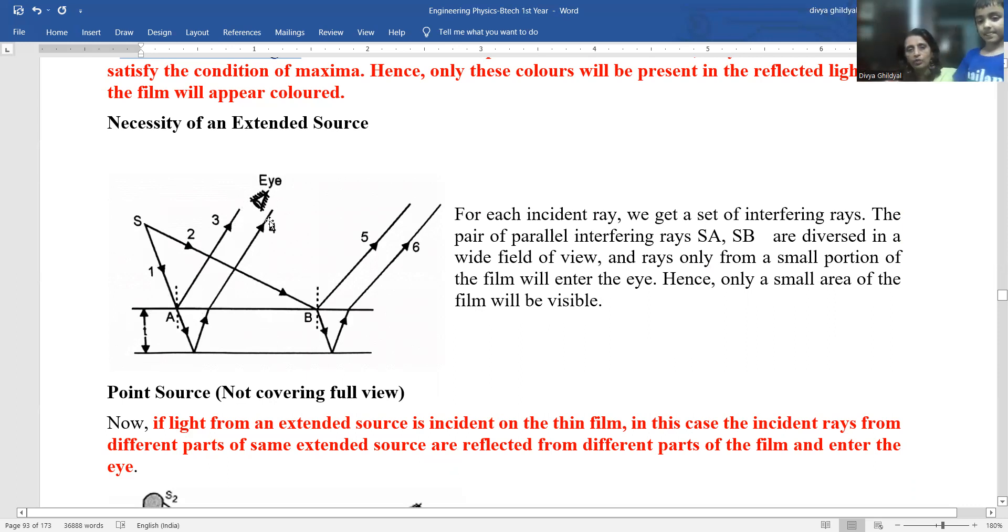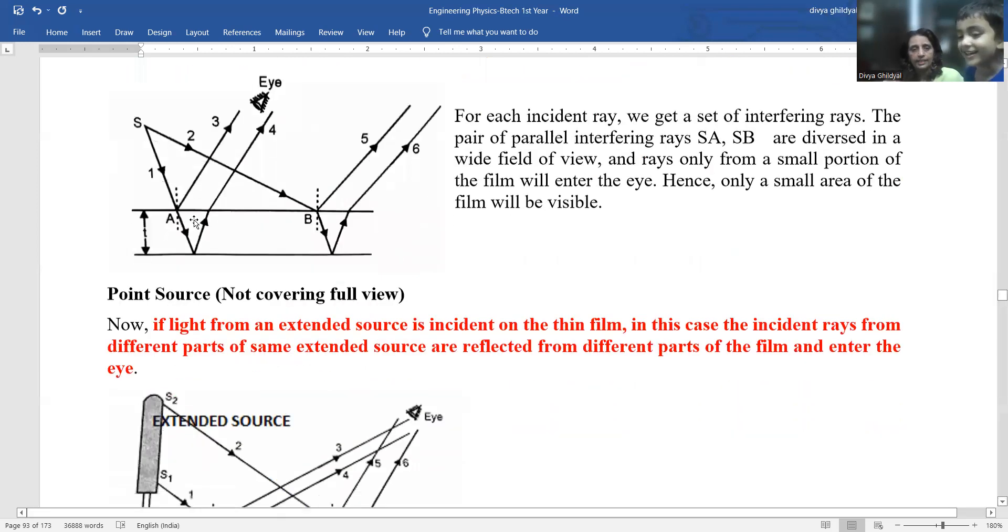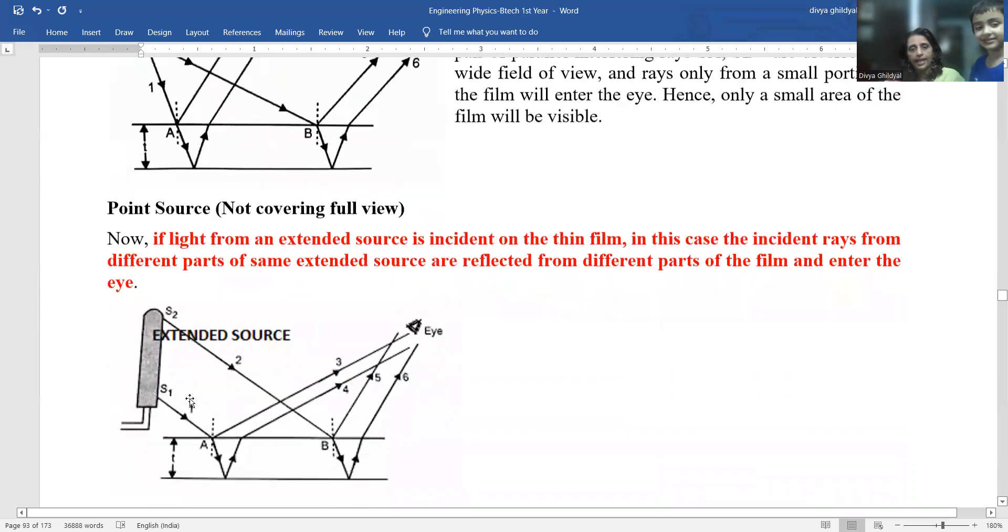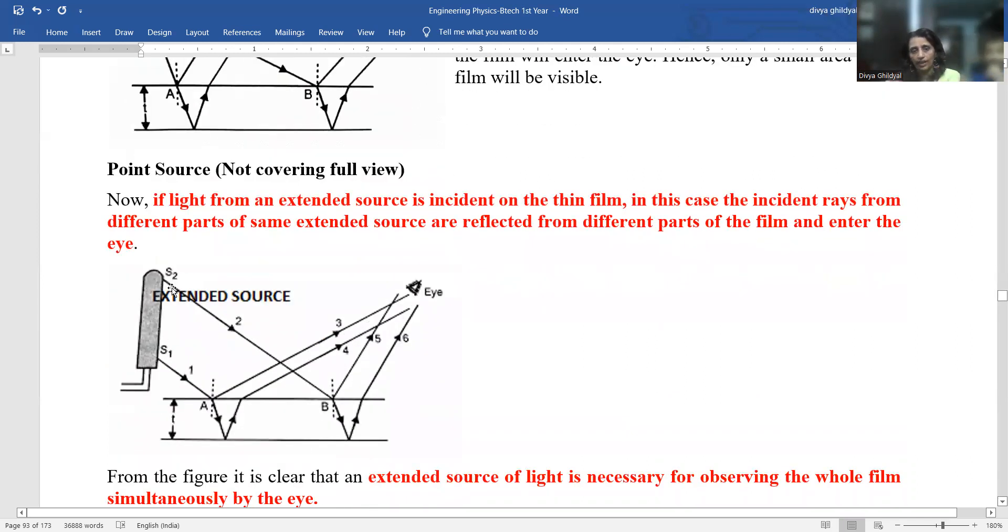But my source of light here is limited. It is a point source and it is not covering the full thin film. So, what happens is, instead of this point source, if I use an extended source of light,